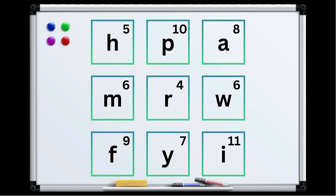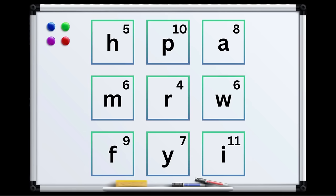Game number one, spelling tic-tac-toe. First of all, draw a 3x3 grid on the board and write a letter number in each space. The students must then spell out a word with the correct amount of letters. For example, happy, H-A-P-P-Y.